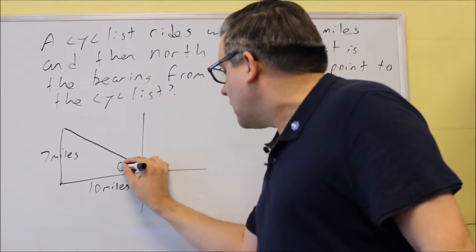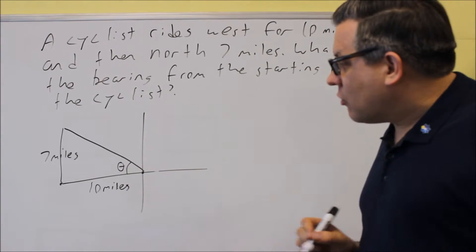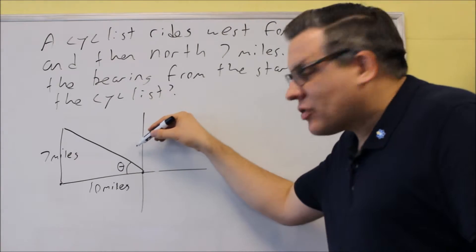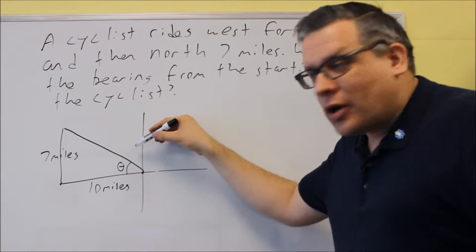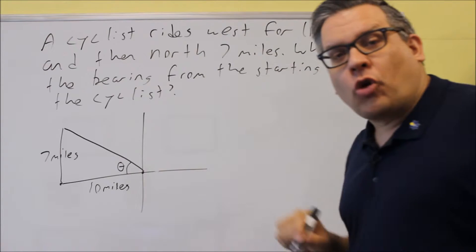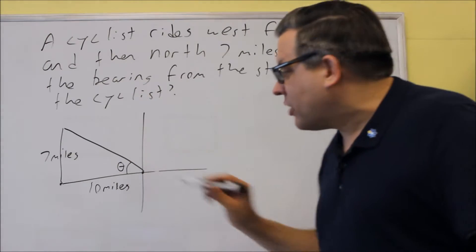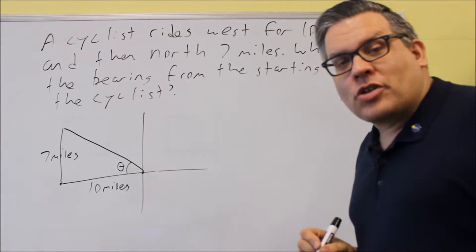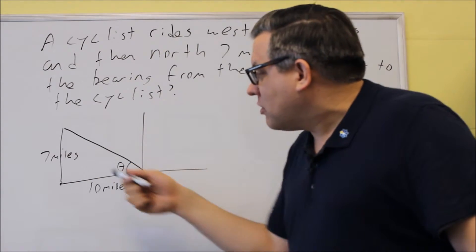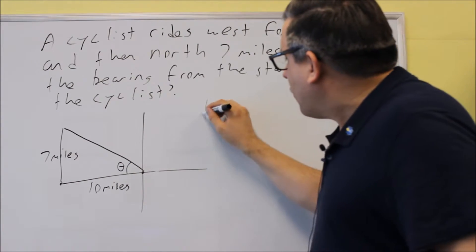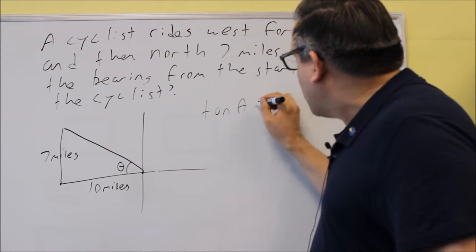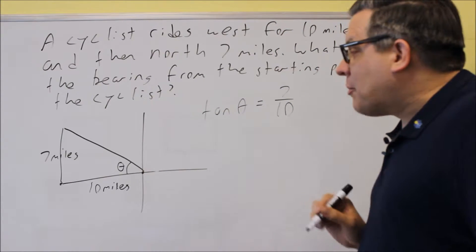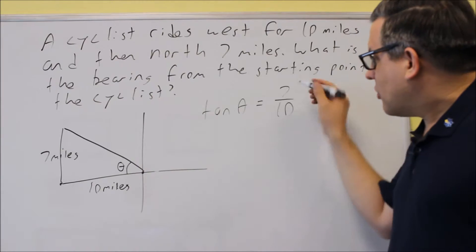I'm going to find this theta angle inside the triangle, and then to get the bearing, we're going to have to subtract that from 90 because bearings are always measured from the north. So let's figure out what theta is by setting up a trig function that relates to the information we're given. We're given an opposite and an adjacent, so we can use tangent. Tangent theta equals opposite over adjacent, so 7 over 10, which is 0.7.